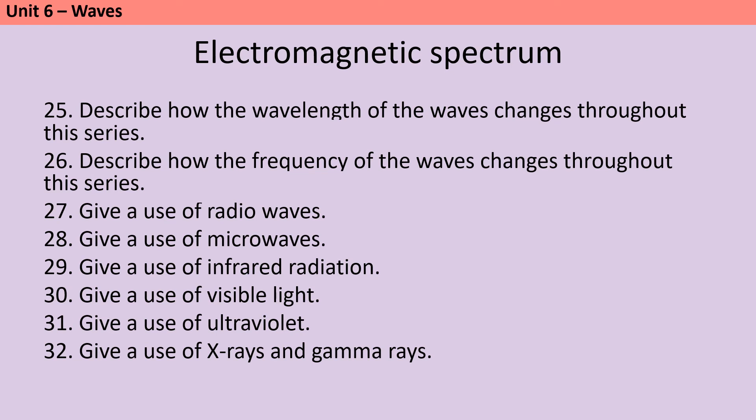While radio waves have the longest wavelengths and these can be up to maybe a kilometer, gamma rays have much shorter wavelengths and this could be as small as 10 to the minus 15 meters. Frequency goes the other way around. So as the wavelength gets longer, of course, you have fewer waves passing per second. So this means that radio waves have a very low frequency, whereas gamma rays have a much higher frequency.